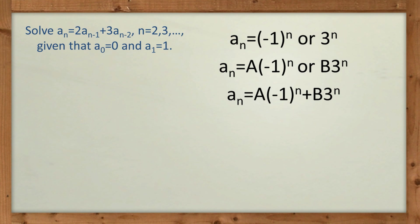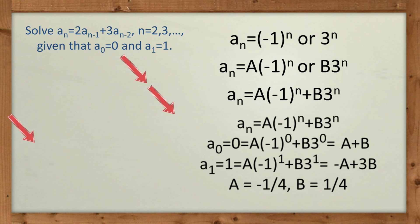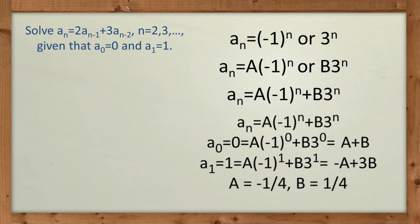So the last step with all of these, if you're given initial conditions, like we are here, is to use those initial conditions to solve for big A and big B. And you can see here what I've done, I've used A_0 equals 0, and we feed in n equals 0, and we get A plus B. So 0 equals A plus B. When we use A_1 equals 1, in this line here, you can see we get that 1 equals negative A plus 3B. We add the two equations, and we solve and we get A equals negative quarter, and B equals 1 quarter.